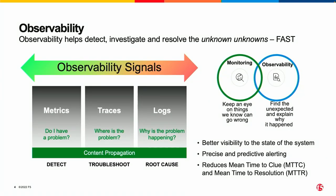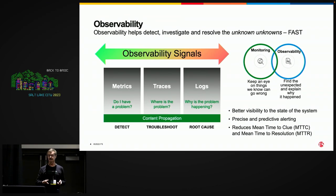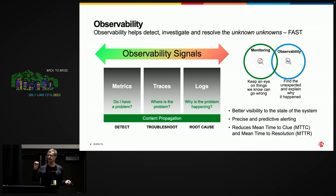And that becomes really important when we're looking at today's world, because we have all sorts of data coming in. These are the observability signals: metrics, traces, and logs — or otherwise known as: Do I have a problem? Where is the problem? What is the problem? We have this relationship between monitoring and observability — they're actually joint partners. Observability provides data. Monitoring lets us see what the data is telling us. Data is useless without analysis and visualization.